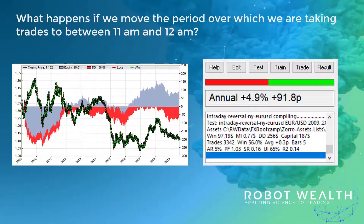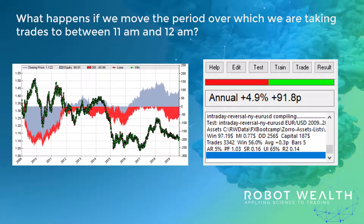So let's try and break it. What happens if we move the period over which we take trades to between 11am and 12pm? Previously we were just taking them at 11am. Now let's move that out an hour and take them between the hours of 11 and 12. This isn't a result that inspires confidence. We've simply shifted our trade entry window by one hour, and the backtest result is significantly worse. Our average profit per trade has dropped to 0.3 pips, and the performance is poor even without taking costs into account.